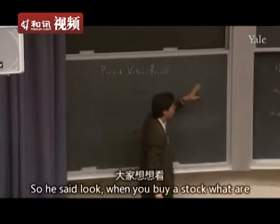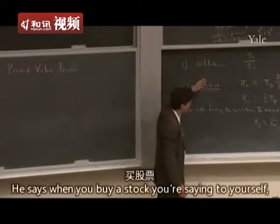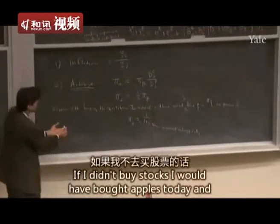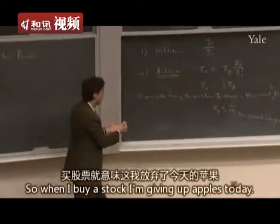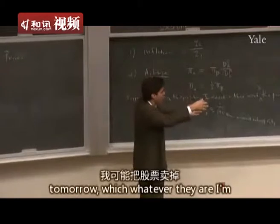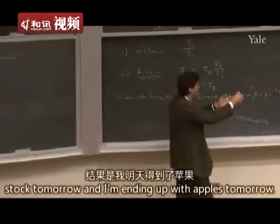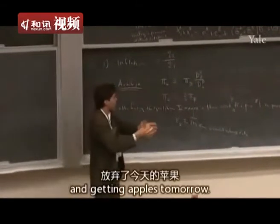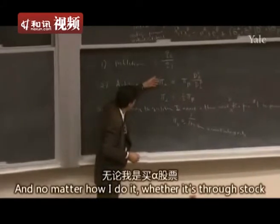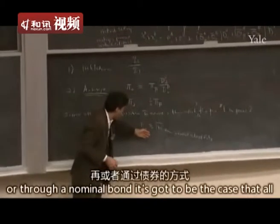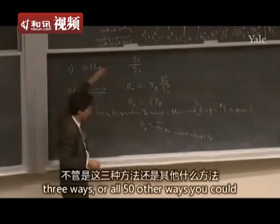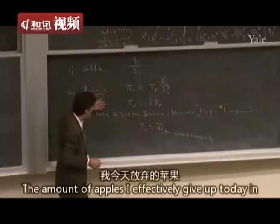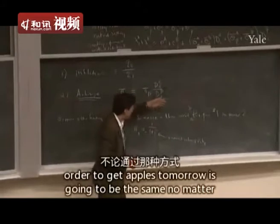When you buy a stock, what are you really doing? This is the principle of arbitrage. Fisher says: when you buy a stock, you're giving up money today — money today is consumption, since you would have used it to buy apples. So when you buy a stock, you're giving up apples today, getting dividends tomorrow, and ending up with apples tomorrow. No matter how you do it — through stock alpha, stock beta, or a nominal bond — it's got to be the case that all those ways give you the same trade-off: the amount of apples you effectively give up today in order to get apples tomorrow is the same no matter which way you do it.